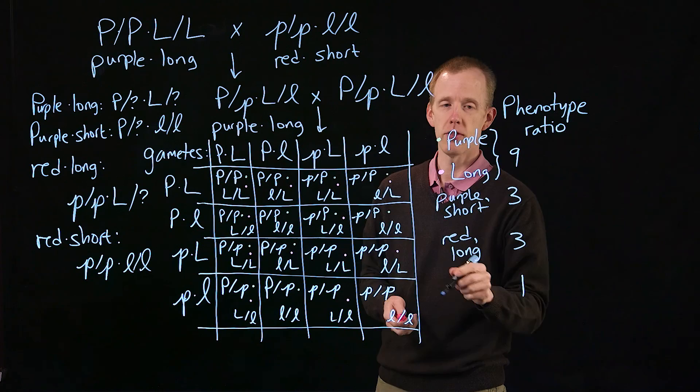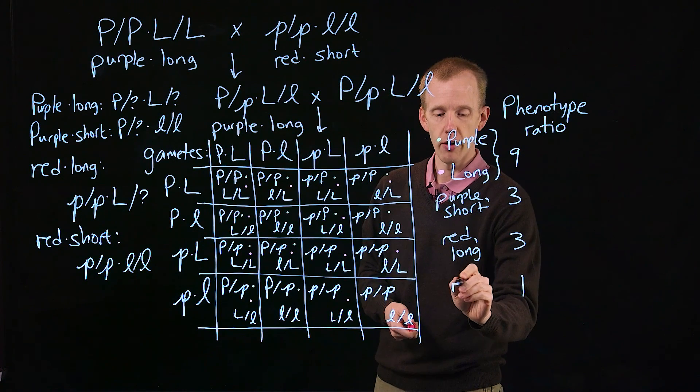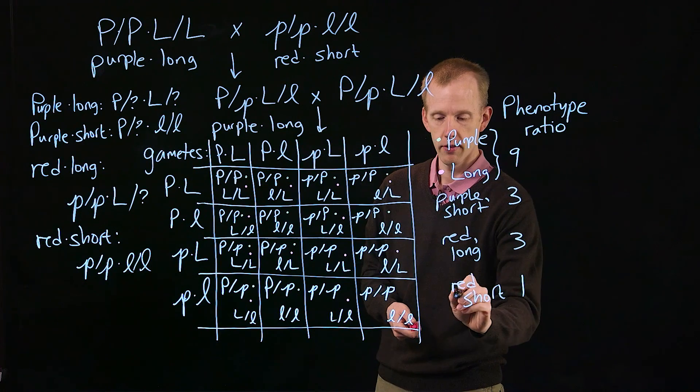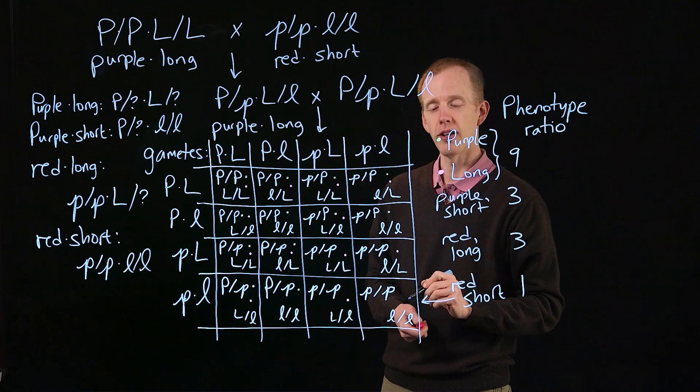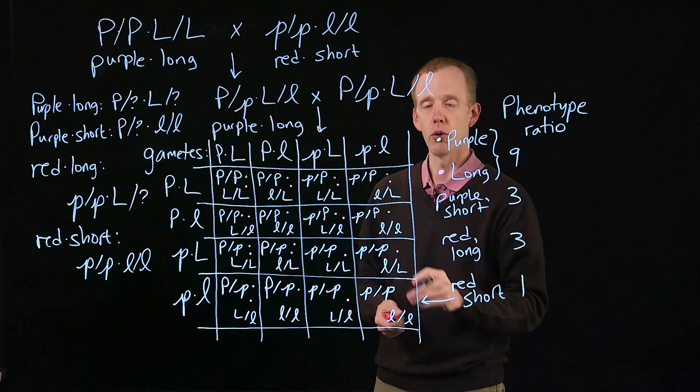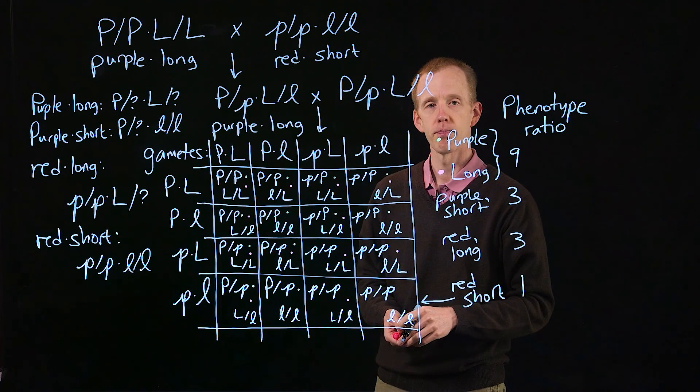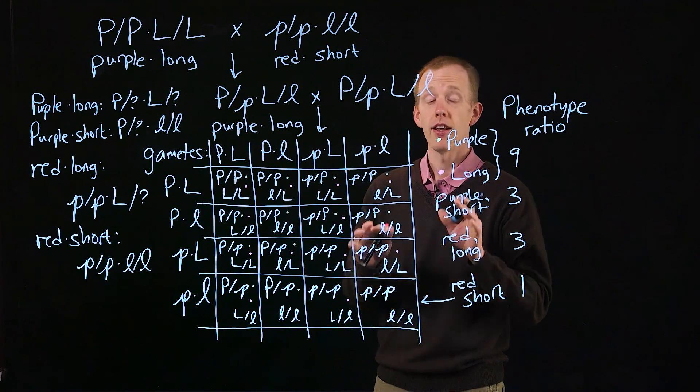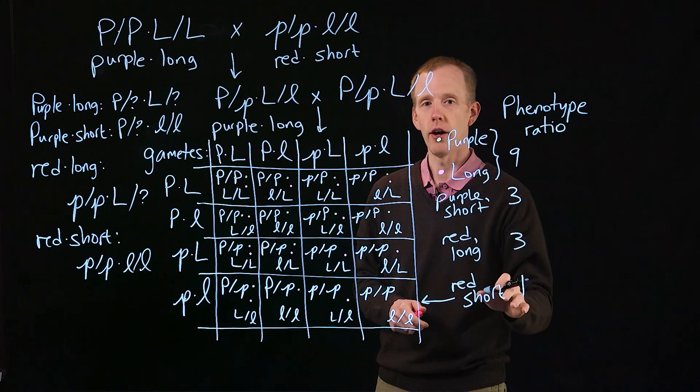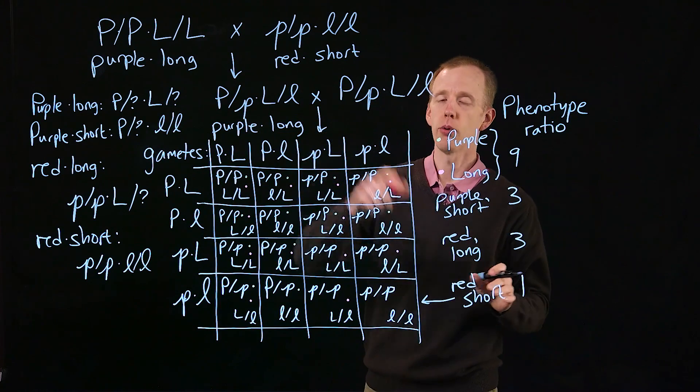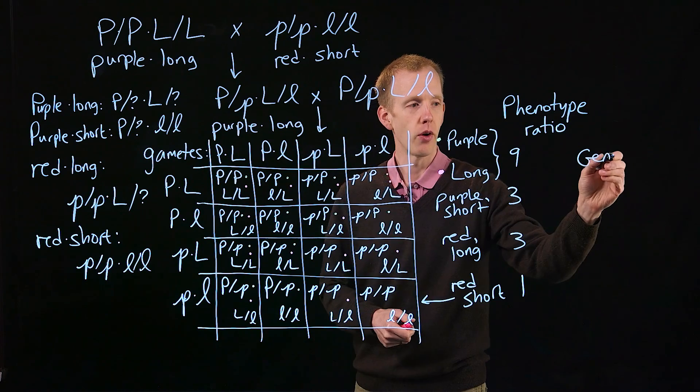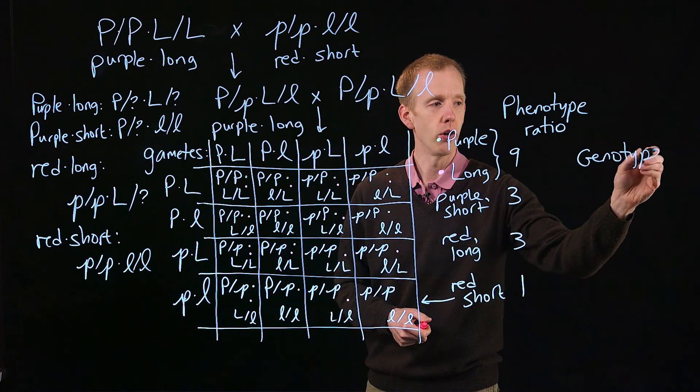And then the very rarest phenotypic combination, red flowers with short pollen, is only one square down there in the bottom right-hand corner, where we have a homozygote for both recessive alleles. Now, that's the phenotype ratio: nine to three to three to one. That's the expected ratio of the output of a dihybrid cross. We could also look at the genotype ratio, and I'm going to ask you to do this on your own.